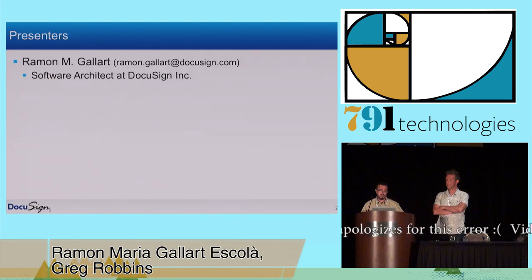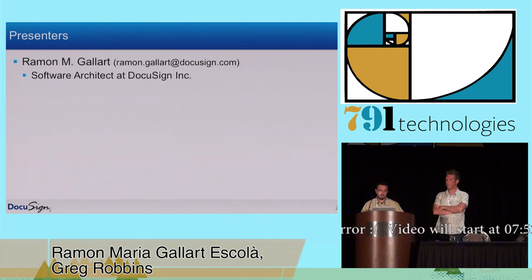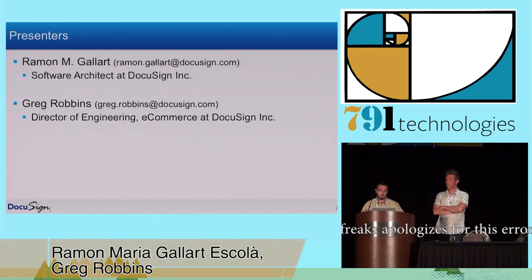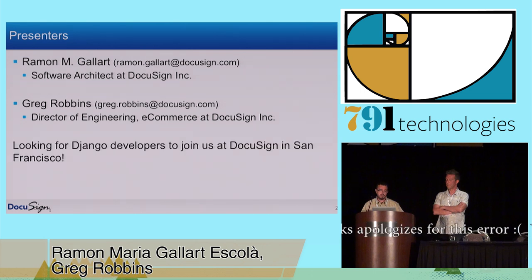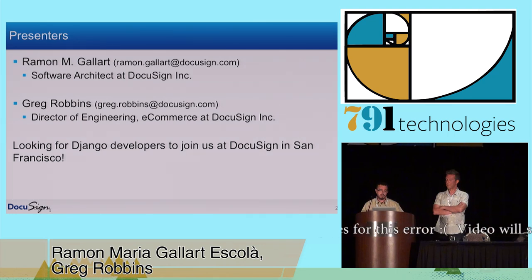We're Ramon and Greg from DocuSign. My name is Ramon, I'm coming from Barcelona, I'm working at DocuSign as a super architect. My name is Greg Robbins, I'm the technical director of e-commerce at DocuSign. We worked together actually the last couple of years on a lot of projects, both here and in San Francisco and in Barcelona — e-commerce related projects, marketing, lead acquisition related products. Right now we're working on some exciting Django projects for DocuSign for customer support and lead acquisition, so we are looking for Django developers who'd like to come to San Francisco and work with us, just so you know.